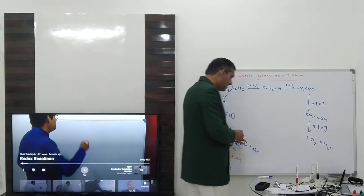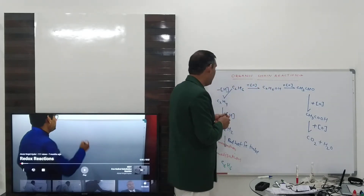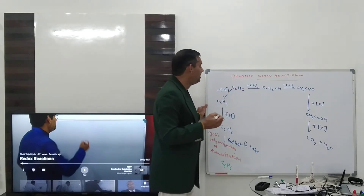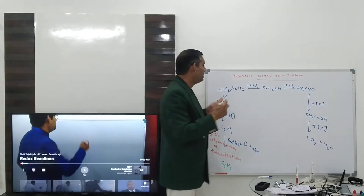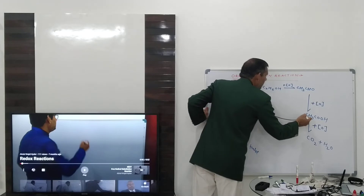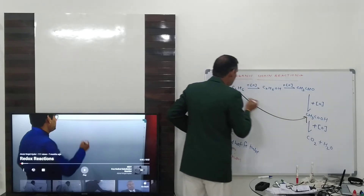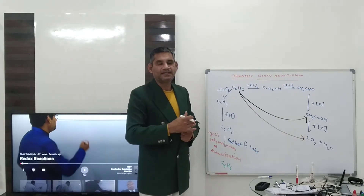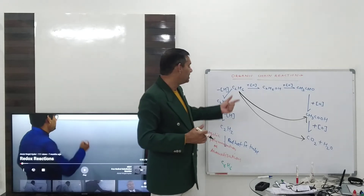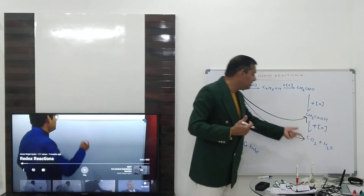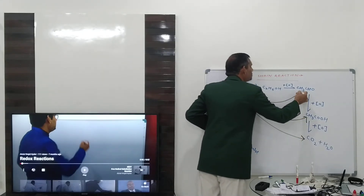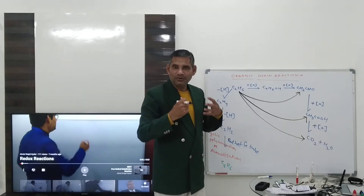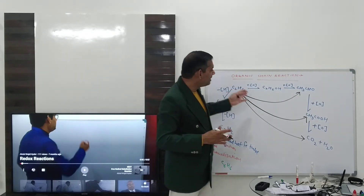Now, this alcohol will be formed by the oxidation of alkane — ethane. If the oxidizing agent is strong, then directly from ethane we can get CH3COOH or CO2. That depends upon the oxidizing power of the oxidizing agent. So from alkane, directly we will be getting CO2 or CH3COOH — that totally depends upon the oxidizing power of the oxidizing agent. You should know the strength of the oxidizing agent and accordingly we will be getting products.